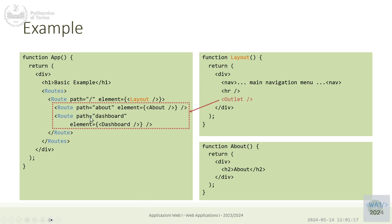Two route elements are nested inside a parent route. Everything that starts with slash will render a Layout element. Then, after slash, if we have 'about' we also render an About component, or if after slash we have 'dashboard' we render a Dashboard component.